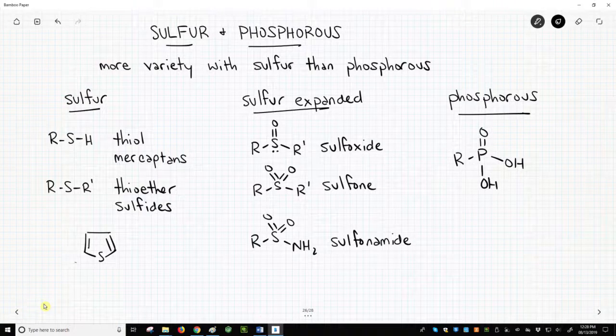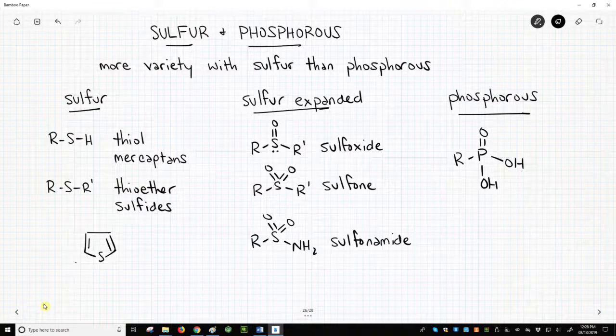Although uncommon, both sulfur and phosphorus can be incorporated in functional groups that are sometimes found in drug-like molecules.